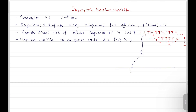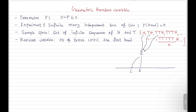Or maybe we do not get success on the first trial and we get success at the second toss. If this is the outcome, the random variable maps it to 2 — because we have done 2 tosses. Similarly, there are other possibilities. So the random variable X can take values 1, 2, 3, 4, 5, ... up to infinity. This random variable can take values from 1 to infinity.